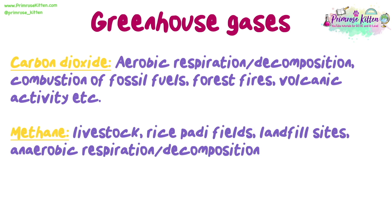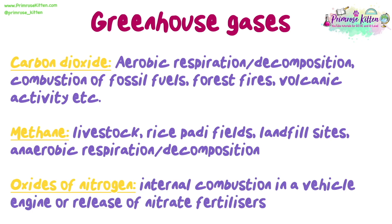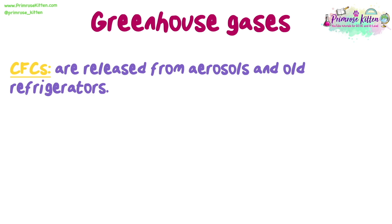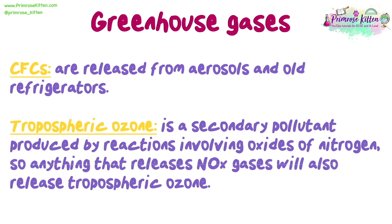Methane sources include livestock, rice paddy fields, landfill sites, and anaerobic respiration or decomposition. Oxides of nitrogen come from internal combustion in vehicle engines or release of nitrate fertilisers. CFCs are released from aerosols and old refrigerators. Tropospheric ozone is a secondary pollutant produced by reactions involving oxides of nitrogen, so anything that releases these gases will also produce tropospheric ozone.